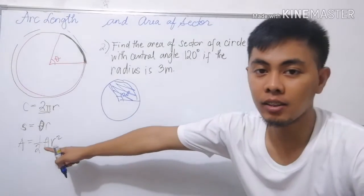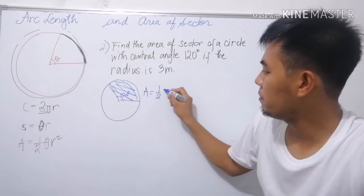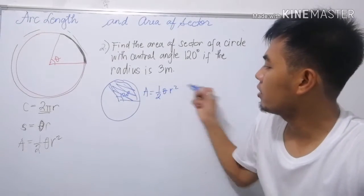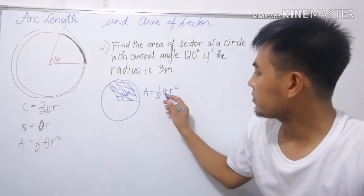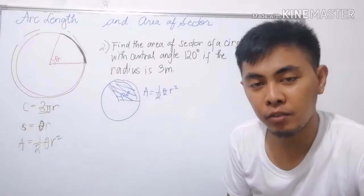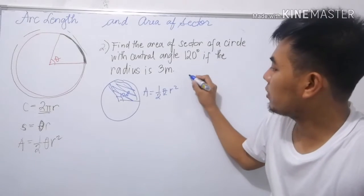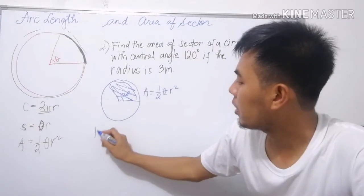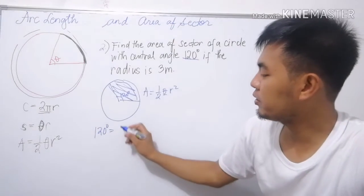The area of a sector is A equals 1/2 θr². As I said earlier, the angle should be converted into radian form. The degree converted into radians. So the angle is 120 degrees, convert to radians.